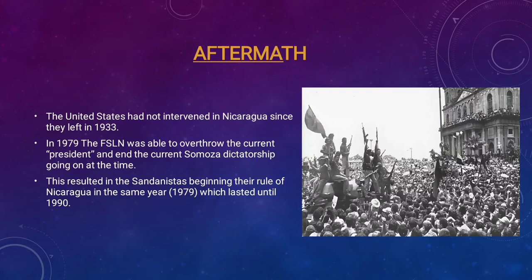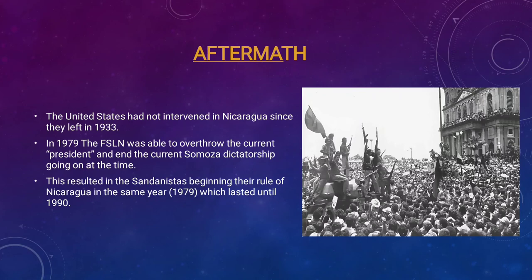The United States had not intervened in Nicaragua since they left in 1933 — very important to mention. They had not gone into the country to push things one way or the other; after they left, they left everything alone. In 1979, the FSLN were able to overthrow the current 'president' — in quotation marks because it really wasn't a legitimate presidency — and end the Somoza dictatorship. This resulted in the Sandinistas beginning their rule of Nicaragua in 1979, which lasted until 1990.